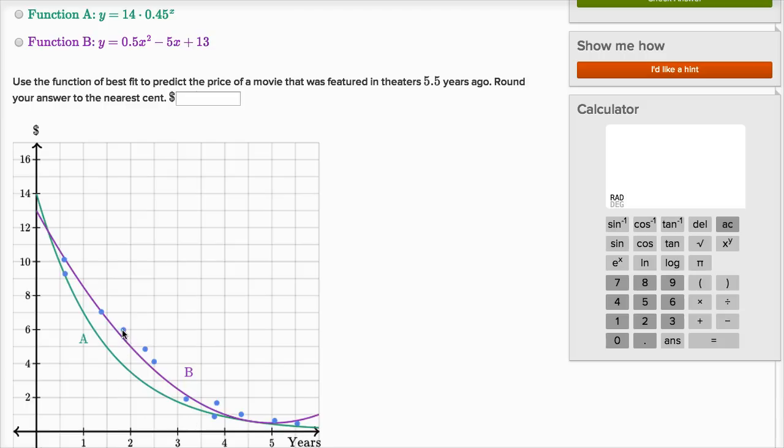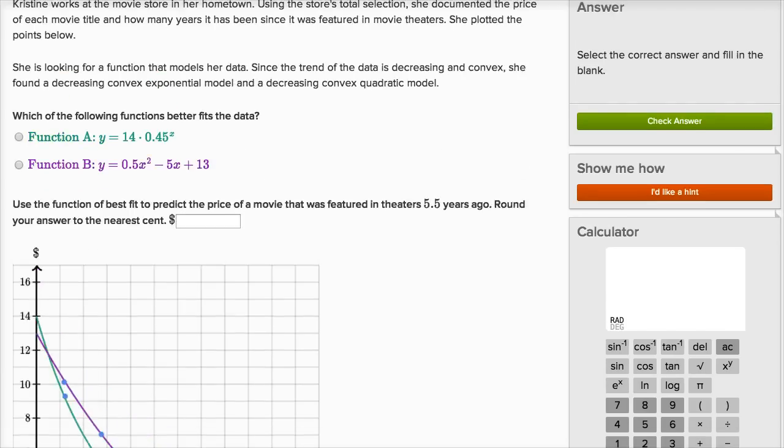So for example, this data point right over here shows a movie that the title costs $6 and it has been released for almost two years, a little under two years. This data point right over here is a movie that has been released for almost four years, maybe three and three quarters years. And they're selling that for a dollar or even a little bit less than a dollar. So those are her data points.